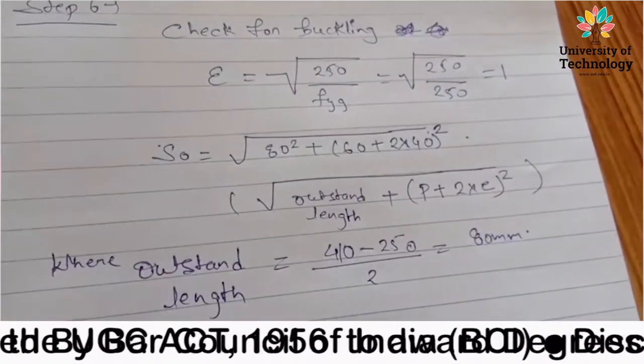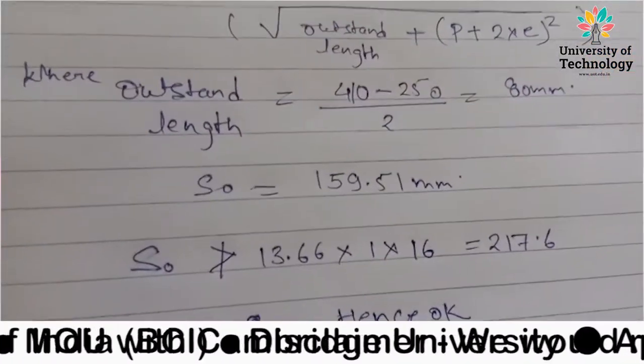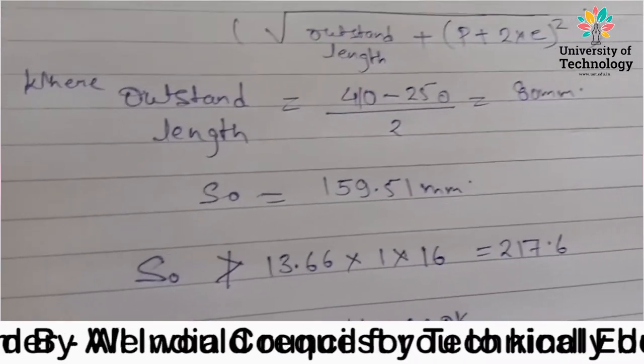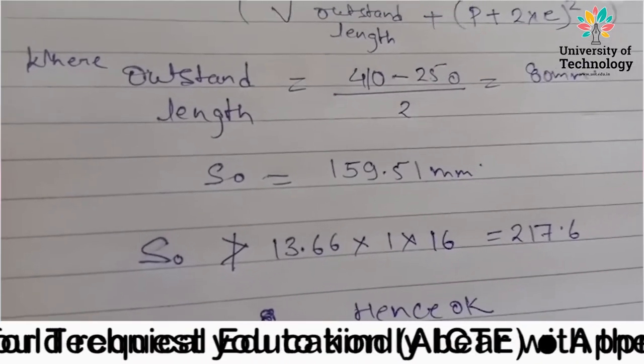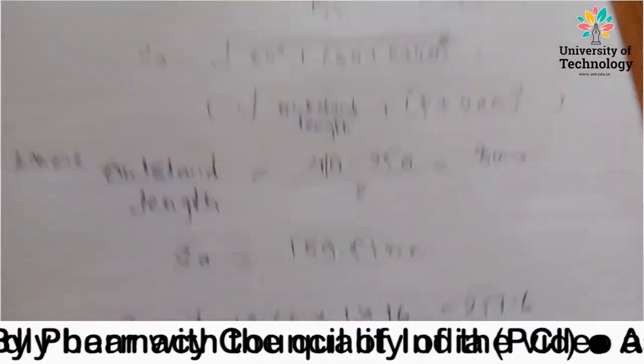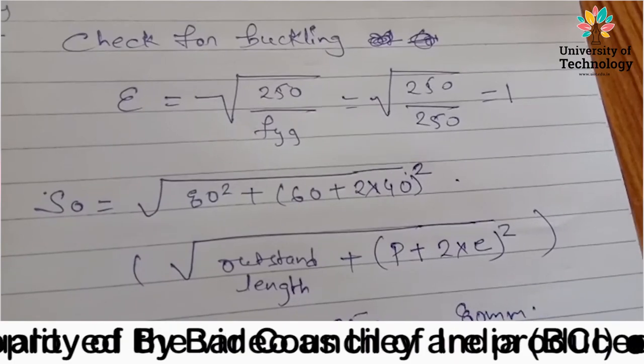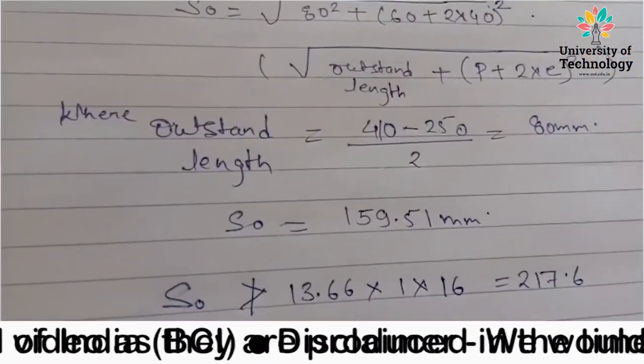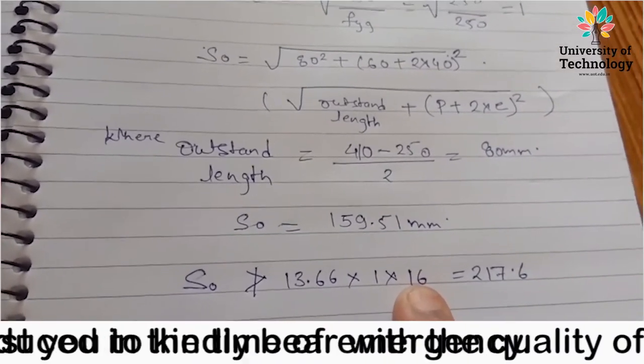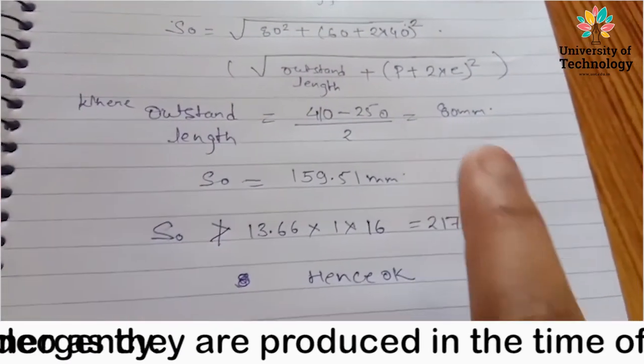Last, check for buckling. E value will be root over 250 upon FY. We have to find outstanding length. Outstanding length, sum of 410, which is the gusset plate, minus 250, the leg of the angle section. This value is equal to 80 mm. So slenderness ratio is root over outstanding length plus p into 2 into e whole square. S naught, we also have a formula 13.66 into e into Tg, thickness of gusset plate. This value is less, and the calculated value is more. So hence, okay.